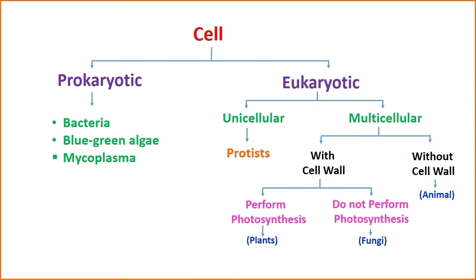Cells are divided into two types: prokaryotic and eukaryotic. Prokaryotic cells include bacteria, blue-green algae, and mycoplasma. Eukaryotic cells are further divided into unicellular (e.g., amoeba) and multicellular. Multicellular eukaryotic cells are divided into those with a cell wall and those without (e.g., animals). Those with a cell wall are further divided into those that perform photosynthesis, like plants, and those that do not, like fungi.